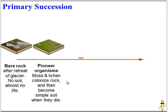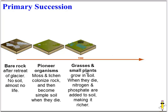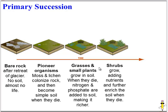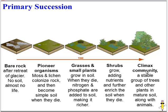Pioneer organisms are generally very simple, like moss and lichen — a symbiotic organism consisting of algae and fungus. When they die and decomposers break down their dead materials, they turn into simple soil, making the community better for new organisms like grasses and small plants. When the grass and small plants die, decomposers convert their materials into inorganic nitrogen and phosphate, enriching the soil for shrubs. When the shrubs add nutrients as well, we finally arrive at our climax community — a stable, diverse, complex community — only possible because all earlier stages kept improving the soil and habitat.